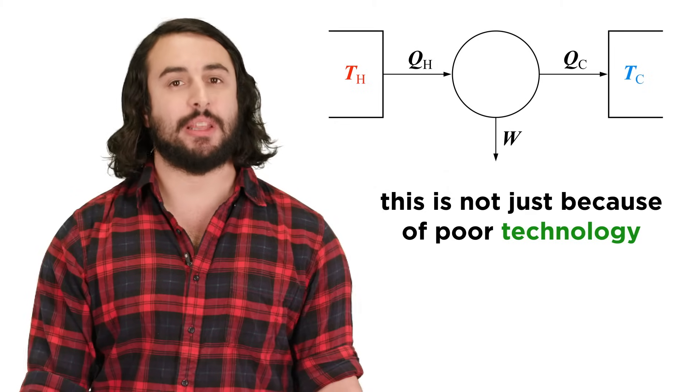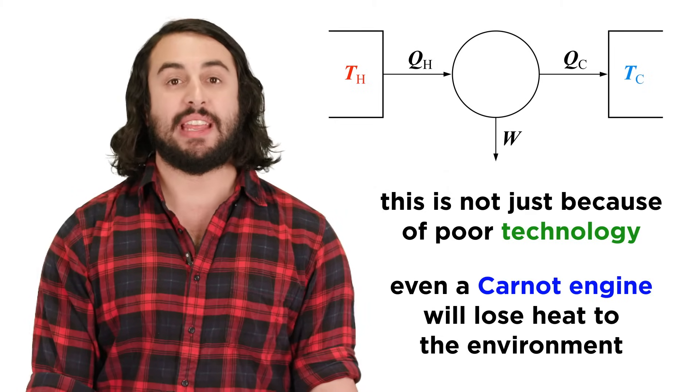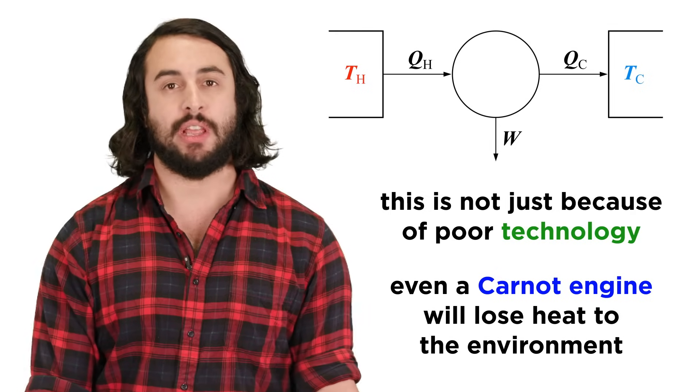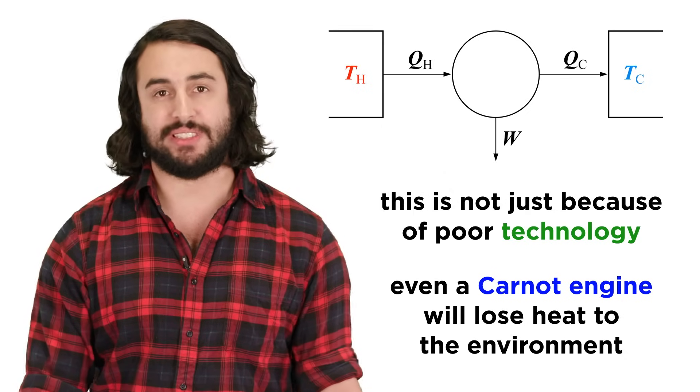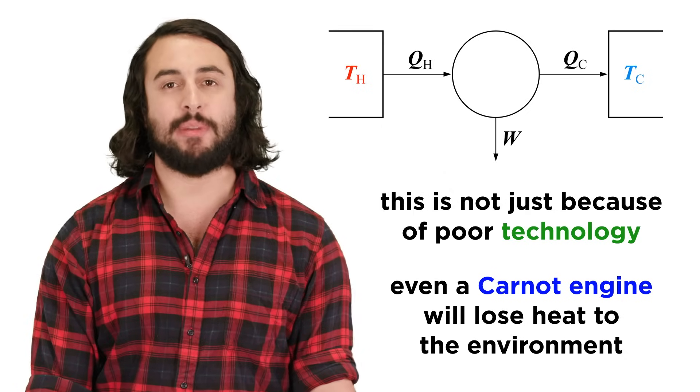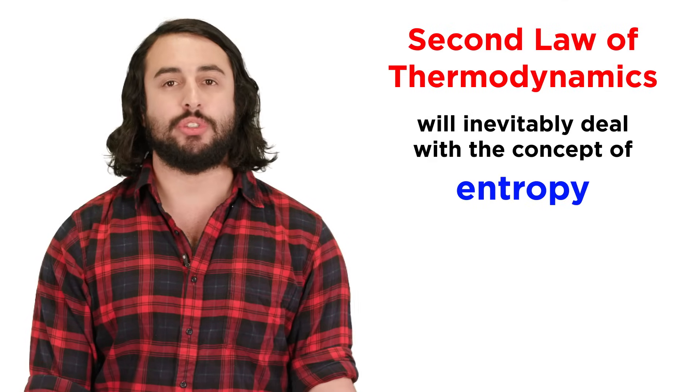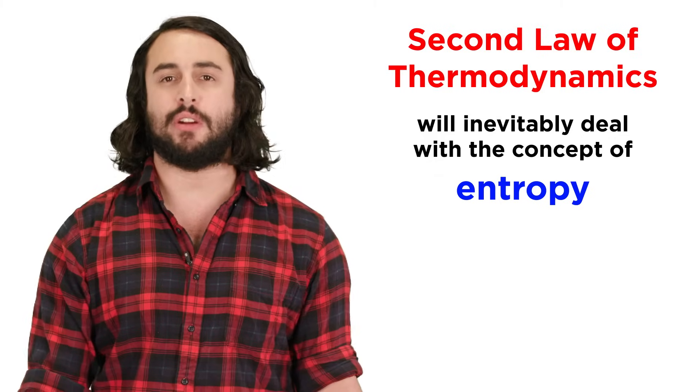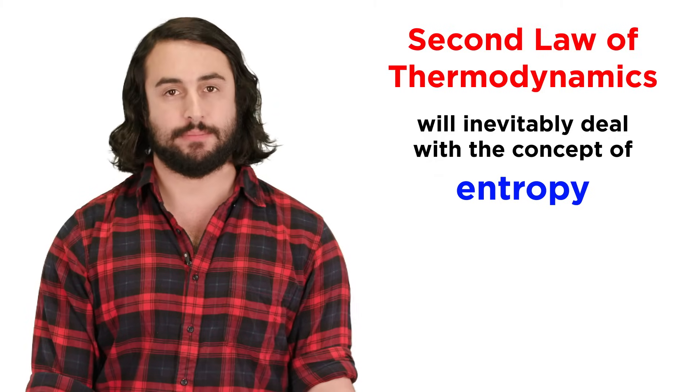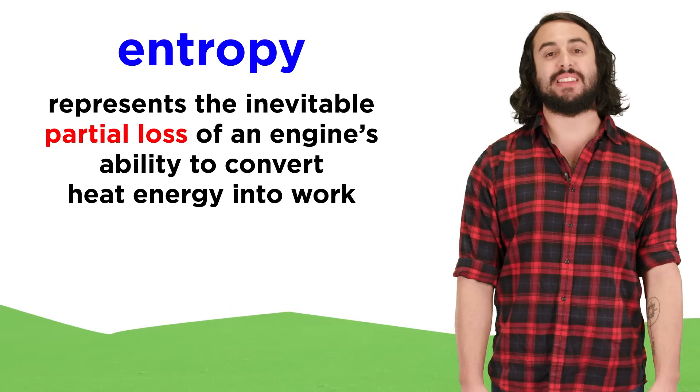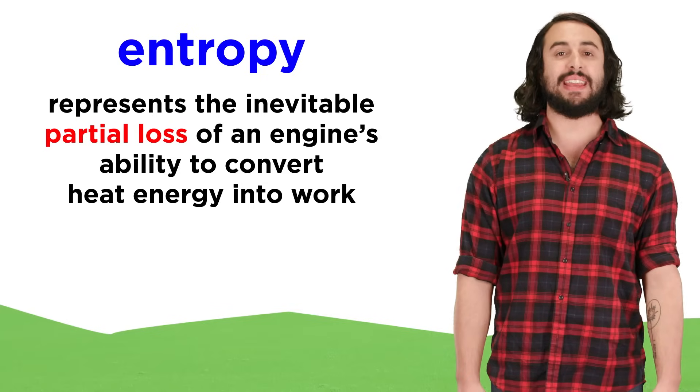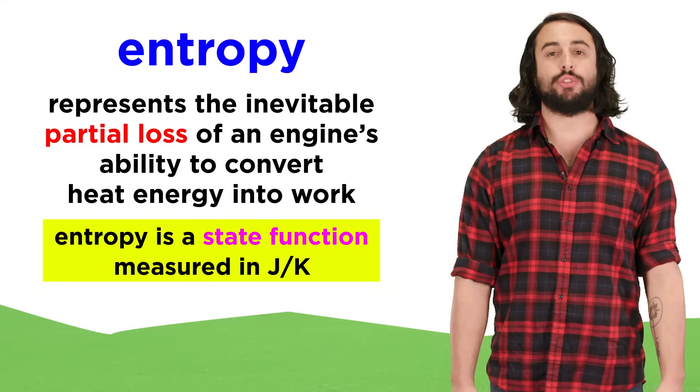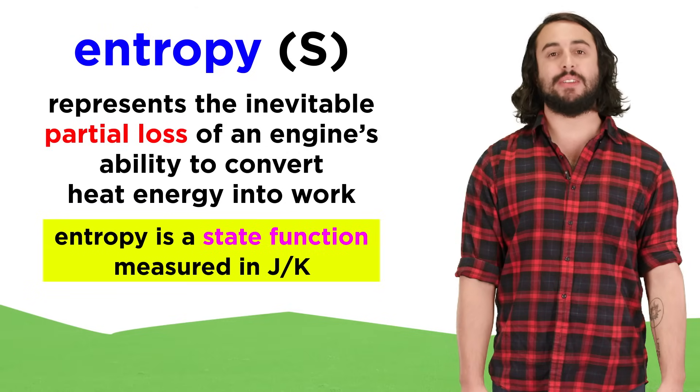But this is not just a limitation of our technology. Even a purely hypothetical perfect heat engine called a Carnot engine can never operate at 100% efficiency. This is a mathematical limitation of heat flow. Whichever way we choose to look at the second law, it will inevitably result in the discussion of a peculiar concept called entropy. Entropy is a term that represents the inevitable partial loss of a heat engine's ability to do work. It is a state function measured in joules per Kelvin, and it will be represented by the letter S.